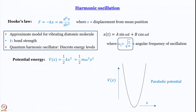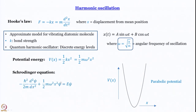This angular frequency of oscillation is given by the root of k over m, where k is the force constant of the spring and m is the mass. For a harmonic oscillator, from classical mechanics itself we know that the potential energy is parabolic. What we do is take this parabolic potential and plug it into the Schrödinger equation in place of V.